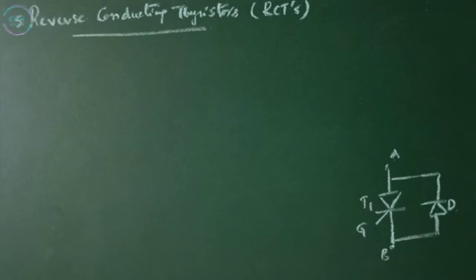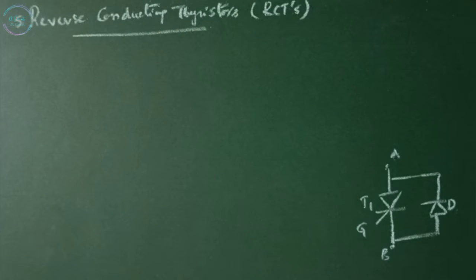Reverse conducting thyristors or RCTs. In many choppers and inverter circuits, an anti-parallel diode is connected across the SCR in order to allow the reverse current flow due to the inductive load and to improve the turn off requirement of commutation circuit. The diode clamps the reverse blocking voltage of an SCR to 1 or 2 volts under steady state condition.